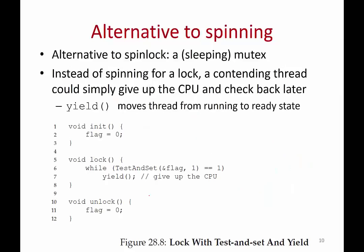Now we've seen simple implementations of spin locks. If one thread has a lock, all other threads are in a busy while loop spinning continuously and wasting CPU resources. The alternative is for a thread to check that the lock is held and simply give up the CPU — go to sleep. Such locks are called sleeping mutexes, and in general, when you say 'mutex' without any qualifier, it means a sleeping mutex. Spin lock and sleeping mutex are the two types of lock implementations.